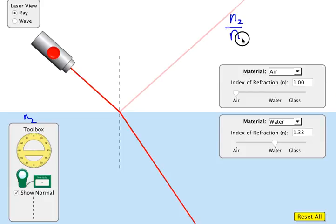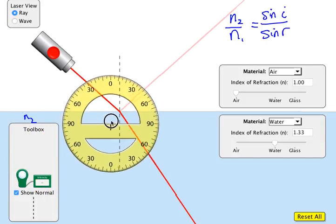Snell's Law basically says this: that if you get the refractive index of where you're going to, which is this guy over here, and we divide it by the refractive index of where you're coming from over here, then the variation is equal to the sine of the angle of incidence divided by the sine of the angle of refraction.